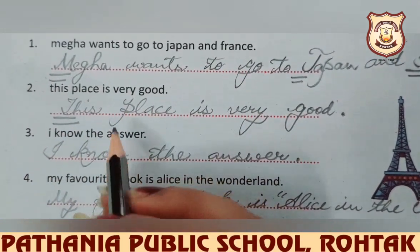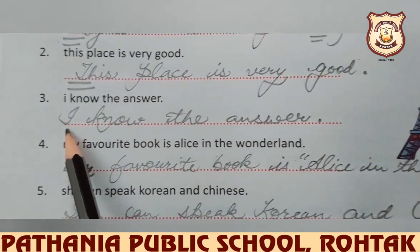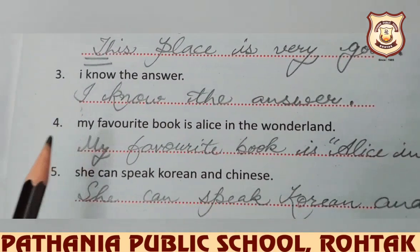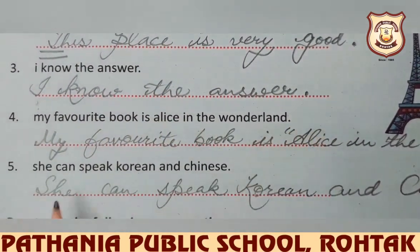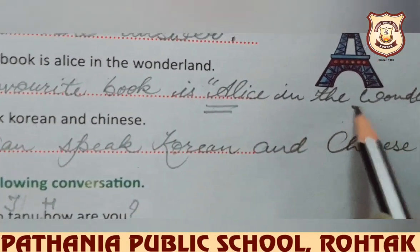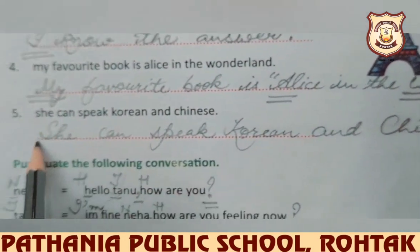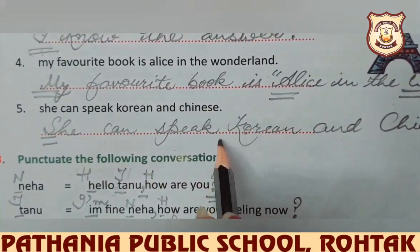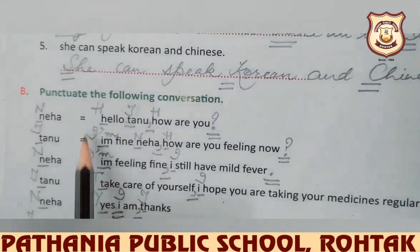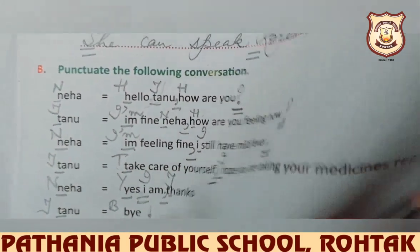'This place is very good.' — T capital for the first letter. 'I know the answer.' — I capital, also pronoun I is always capital. 'My favorite book is Alice in Wonderland.' — M capital, Alice is a proper noun, and Wonderland — W capital. 'She can speak Korean and Chinese.' — S capital for first letter, K capital for Korean and C capital for Chinese, because language names take capital letters.